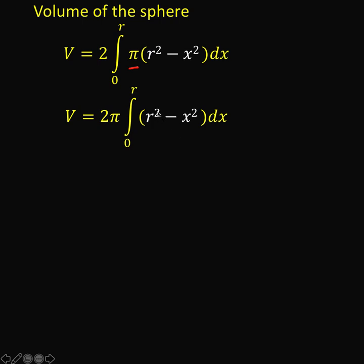Next, notice that r is a constant. So, the antiderivative of r squared dx is r squared x. Because r is a constant. The antiderivative of a constant is a constant times the variable of integration. Then, the antiderivative of x squared dx is x cubed over 3.